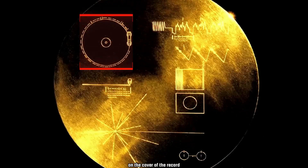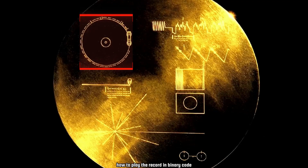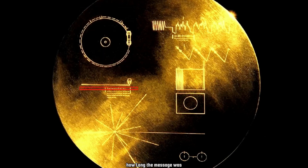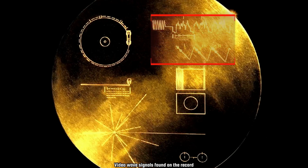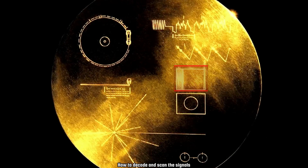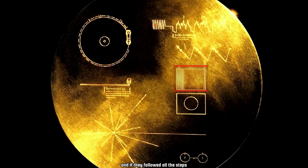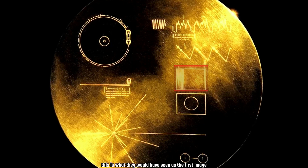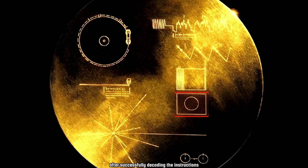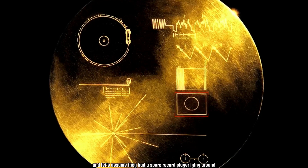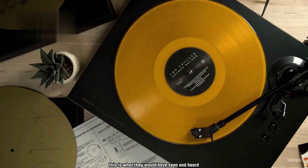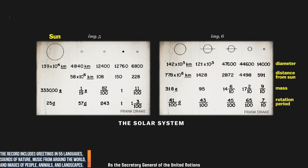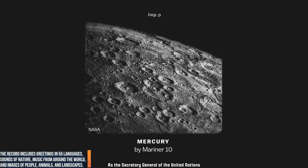On the cover of the record were instructions in binary code on how to play the record, the duration of the message, the location of our sun, video wave signals found on the record, and how to decode and scan them. If they followed all the steps, this is what they would have seen as the first image. After successfully decoding the instructions — and assuming they had a spare record player — this is what they would have seen and heard.